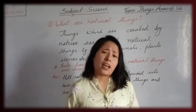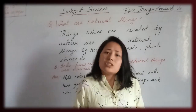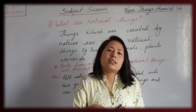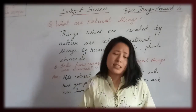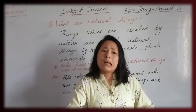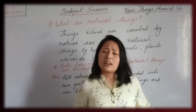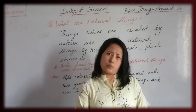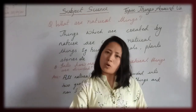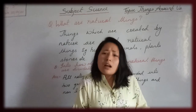What are natural things? Natural things are all things that are naturally obtained — like humans, animals, birds, insects, trees, water animals, water plants. These things are naturally obtained.